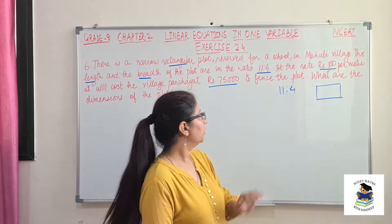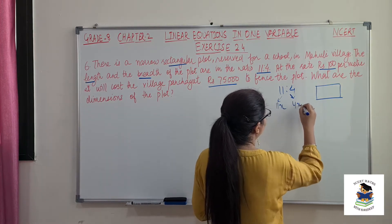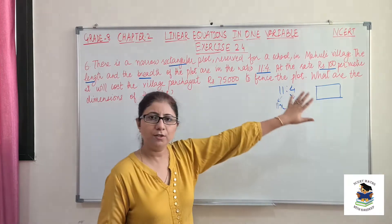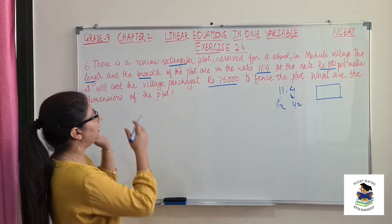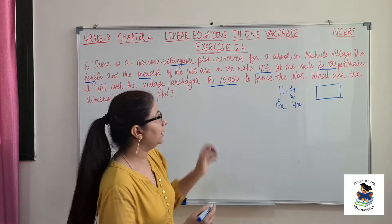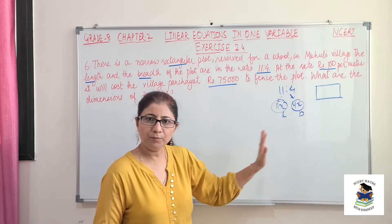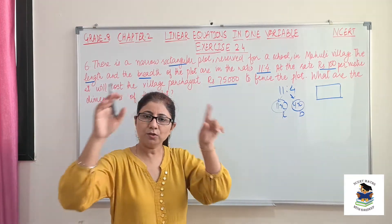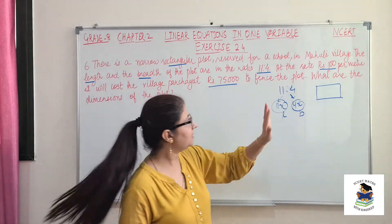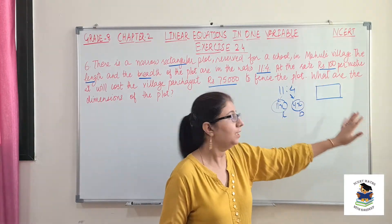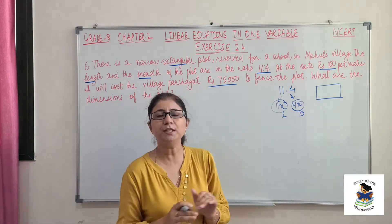Whenever a ratio is given, we will assume the variables as 11x and 4x respectively, in the same order as the parameters given. So length is 11x and width is 4x. For fencing the plot, fencing goes around the boundary, so we need to find the perimeter. If something is to be covered inside, we calculate area — but in our case we need the perimeter.